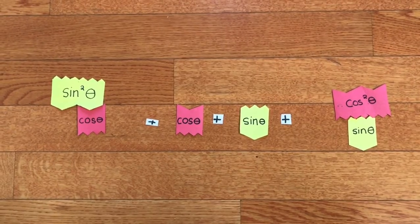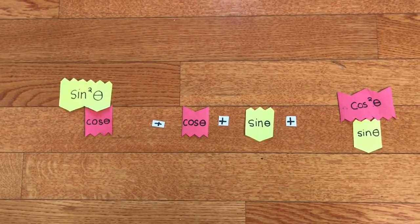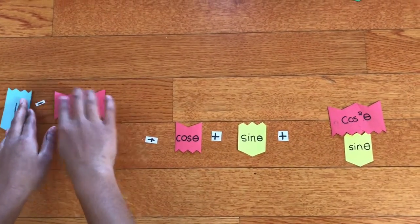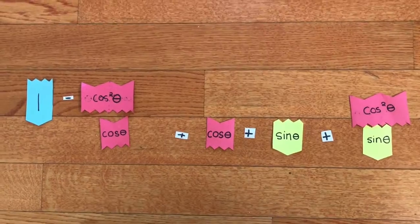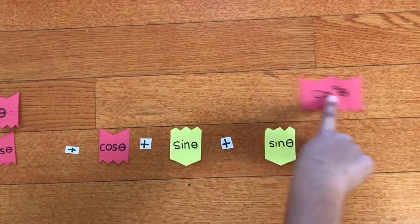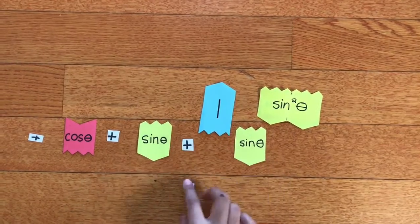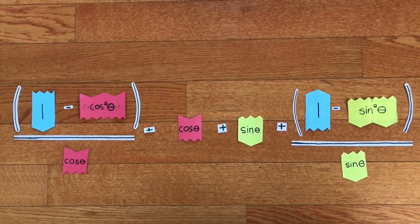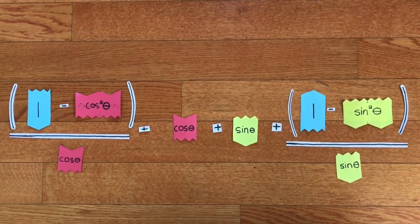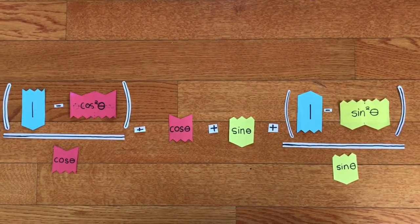Using the Pythagorean identity sine squared theta + cosine squared theta = 1, we see that sine squared theta equals 1 minus cosine squared theta, so we replace sine squared theta with that. Using the same identity, cosine squared theta equals 1 minus sine squared theta, so we replace cosine squared theta with 1 minus sine squared theta. Now we have (1 − cosine squared theta) / cosine theta, plus cosine theta, plus sine theta, plus (1 − sine squared theta) / sine theta.